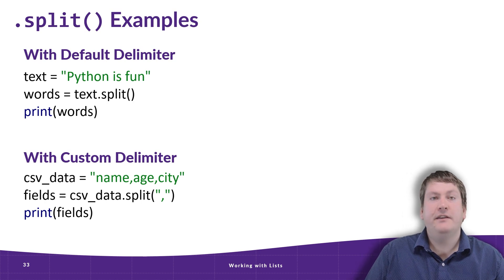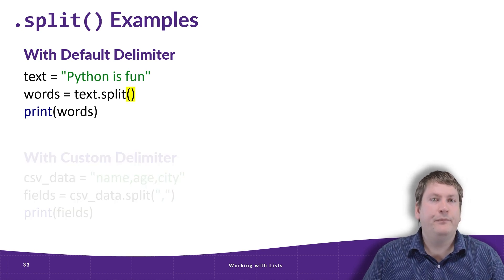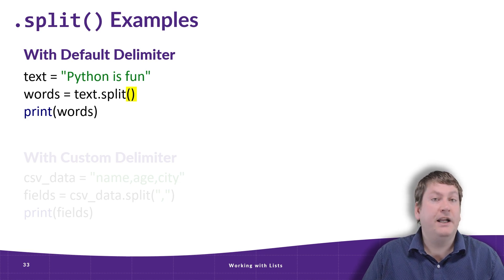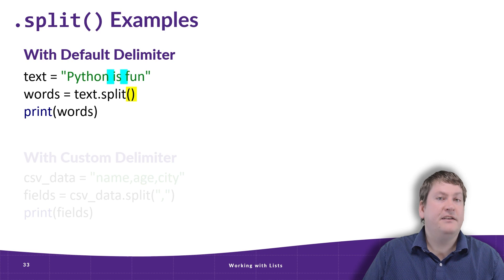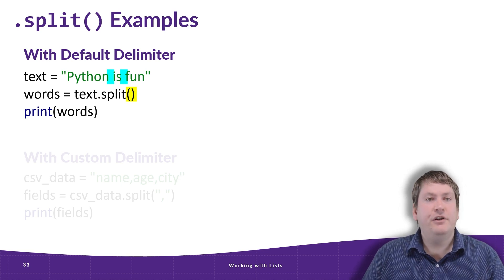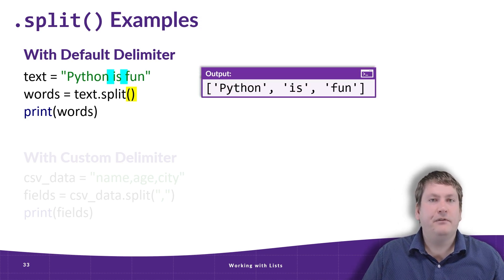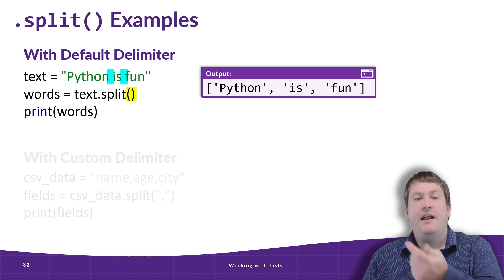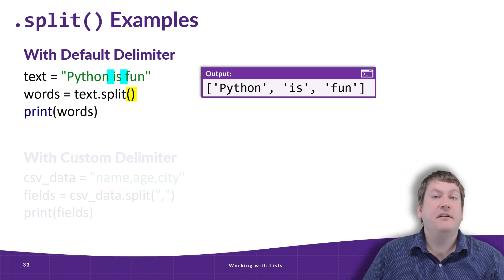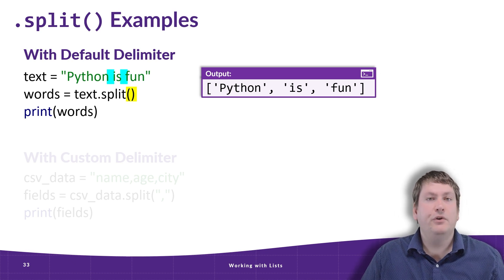We're going to look at two examples: one with the delimiter given and one without. The first example is without the delimiter given, so we're calling the split function with no parameters at all — it defaults to splitting whenever it finds whitespace. If we take a look at the text 'python is fun', there are two points where there is whitespace. So split is going to split the string at those two space characters and return a list with three values: 'python', 'is', and 'fun'. Each one is its own string inside the list.